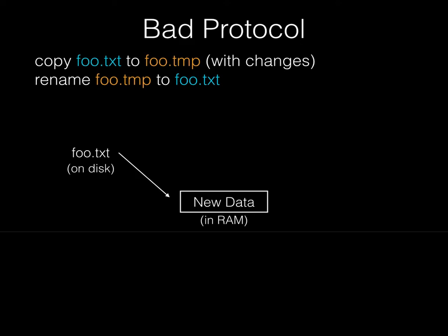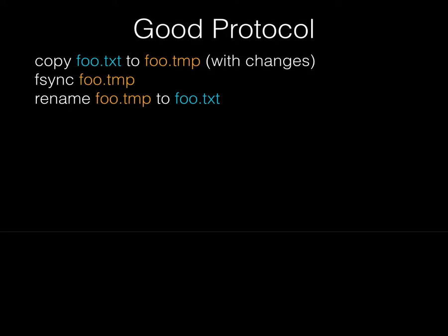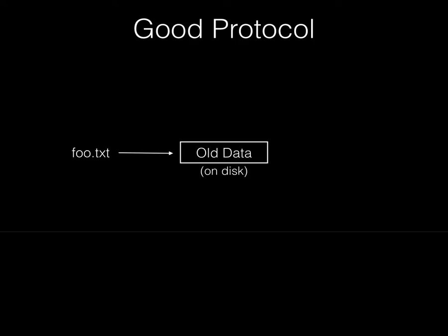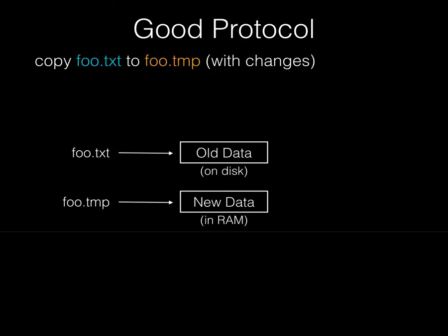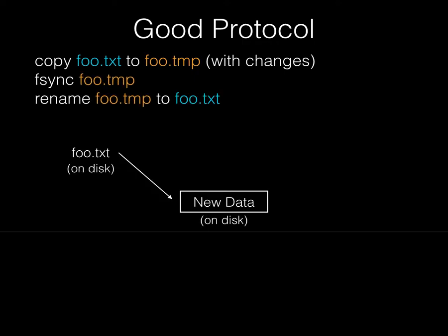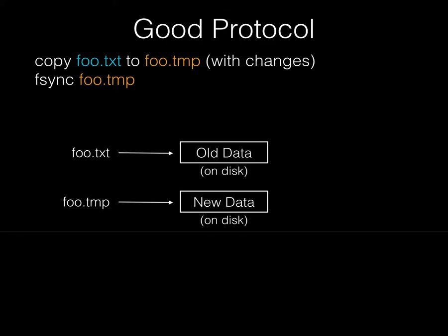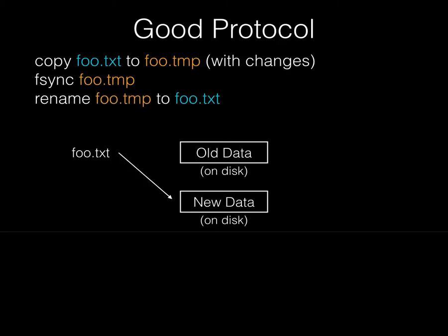To force the file system to flush the new data out first, you do an fsync in between your copy and your rename. This makes it an atomic update. Also worth noting: this alone doesn't guarantee that if you crash after the rename you'll get the new data, because the directory entry might not get flushed to disk. If you really wanted the update to be not only atomic but durable, after the rename you'd also have to do an fsync on the directory containing foo.txt. But the question was only asking for an atomic update, not a durable one.